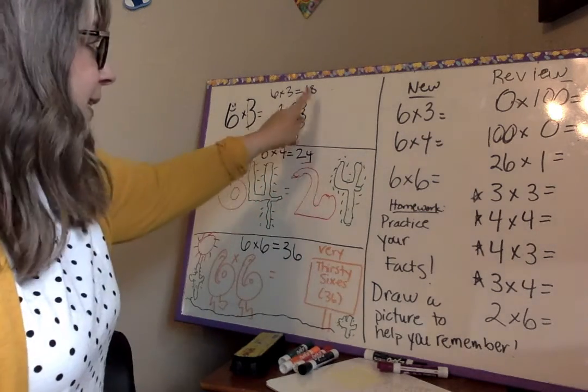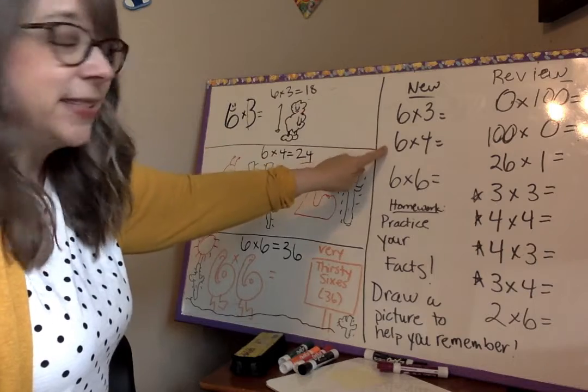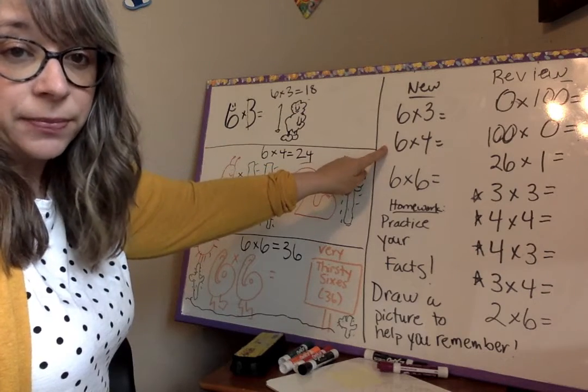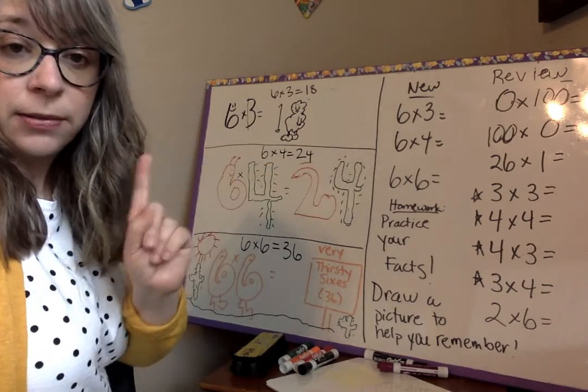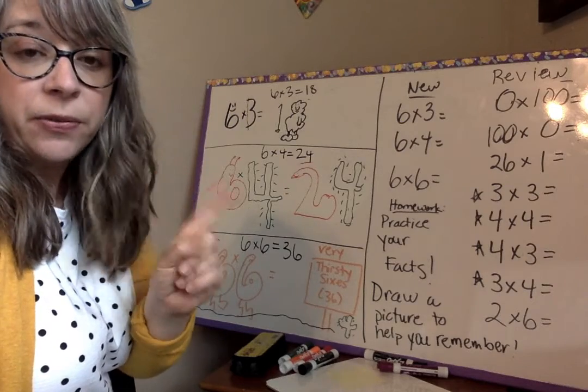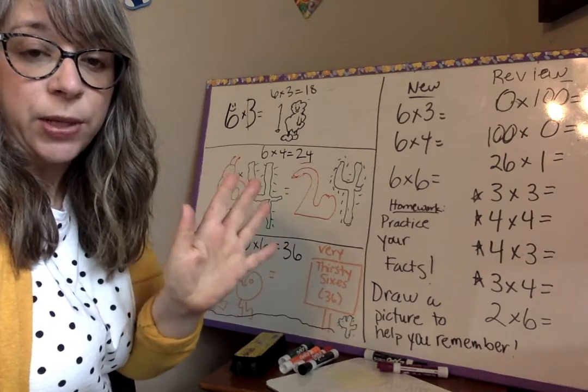So, 6 times 3 is 18, and if you know that 6 times 5 is 30, start with what you know. 5, 10, 15, 20, 25, 30, you can get to 6 times 6.